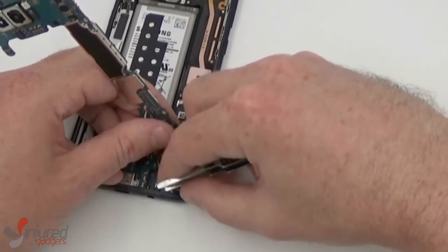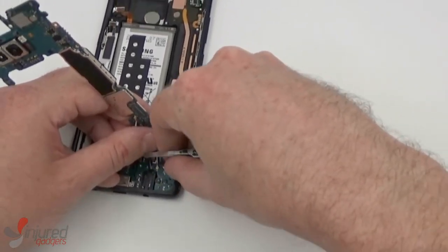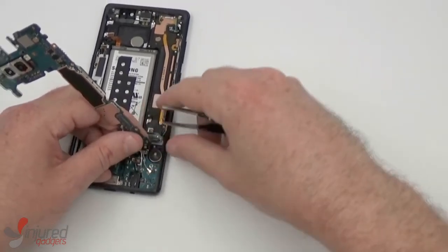And the antenna wires, you can disconnect those, and then the motherboard should come free.